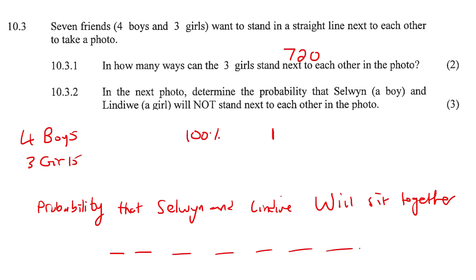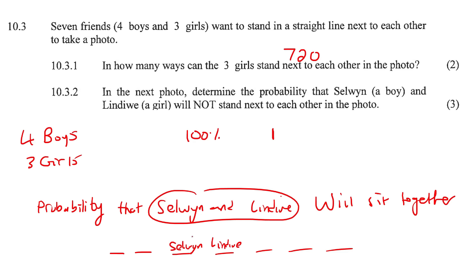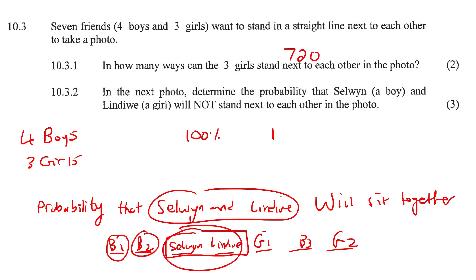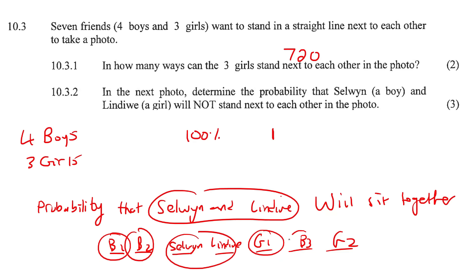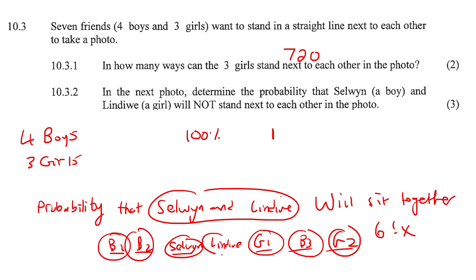We're going to take all seven people but make Selwyn and Lindiwe one unit — put a box around them. The rest are the other five people: three more boys and two more girls besides Lindiwe. How many units can you see? One, two, three, four, five, six — six units. So say six factorial. Within that unit there are two people — Lindiwe might sit first and then Selwyn, or Selwyn first and then Lindiwe — so they can arrange themselves too. That's two factorial. Working that out gives 1,440 ways. There are 1,440 ways where Selwyn and Lindiwe will sit together.